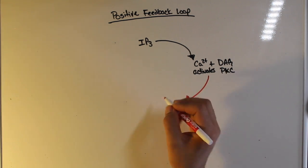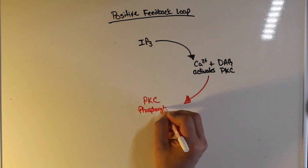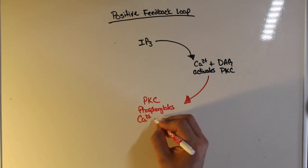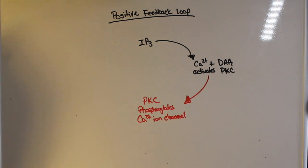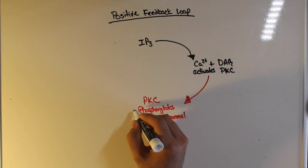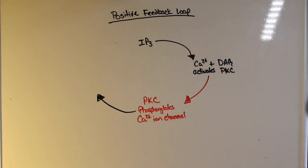Now remember, PKC, or phosphokinase C, was able to phosphorylate the calcium ion channels within the lipid membrane, which caused the increase of intracellular calcium levels within the cell once again.